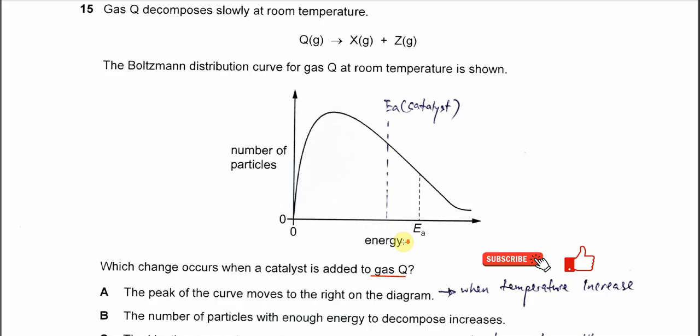First we need to know the effects of the catalyst. It's trying to lower the EA without changing the distribution of this molecular energy or kinetic energy of particles. So the Boltzmann distribution will not change with the presence of catalyst. Only the EA will get lowered.